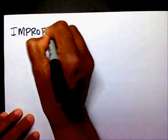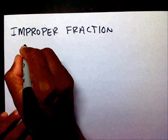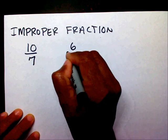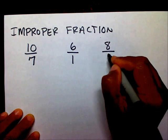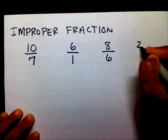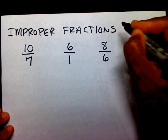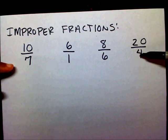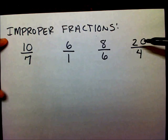An improper fraction will look like this. These are all improper fractions. Why are they improper fractions? Because if you notice, the numerators are larger than the denominator. Ten is larger than seven. Six is larger than one. Eight is larger than six. And twenty is larger than four.